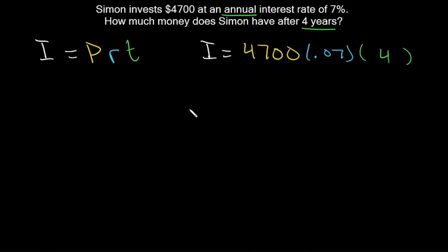So what is this going to be equal to? If we plug this into our calculator, we're going to get our interest equal to $1,316. But this isn't how much money Simon has after 4 years. This is just how much money he made. This is the interest.